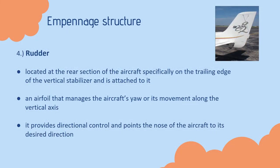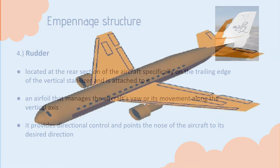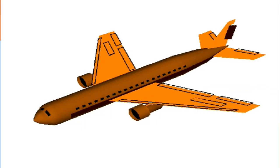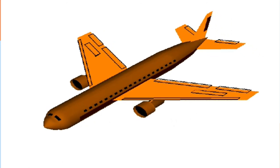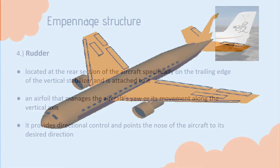The fourth structure is the rudder. It is located at the rear section of the aircraft, specifically on the trailing edge of the vertical stabilizer, and is attached to it. It is an airfoil that manages the aircraft's yaw, or its movement along the vertical axis. It provides directional control and points the nose of the aircraft to its desired direction.